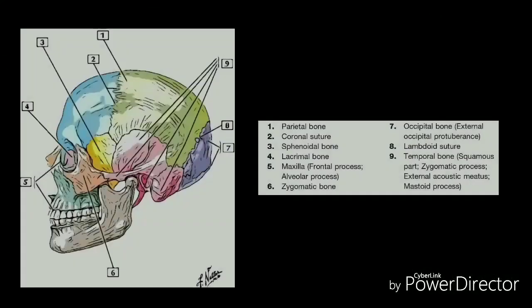The occipital bone forms the base of the skull at the rear of the cranium. It articulates with the first vertebra of the spinal cord and also contains the foramen magnum, the large opening of the skull through which the spinal cord passes as it enters the vertebral column. The occipital bone borders the parietal bones through the heavily serrated lambdoid suture, and also the temporal bones through the occipitomastoid suture.